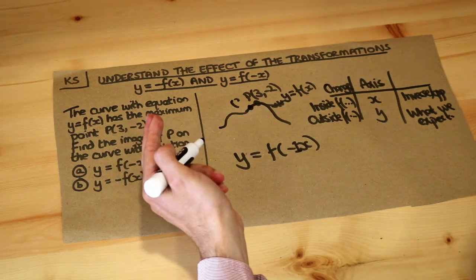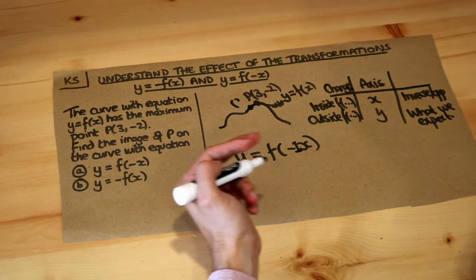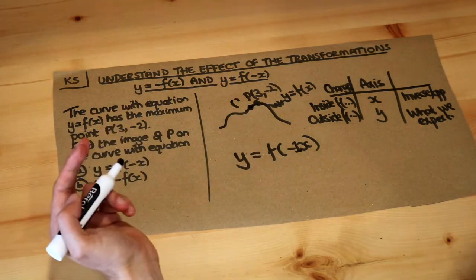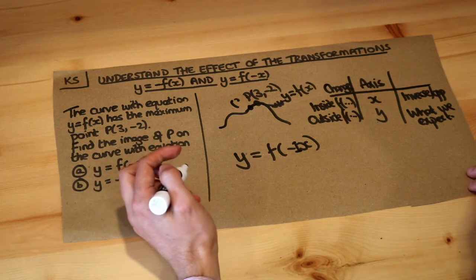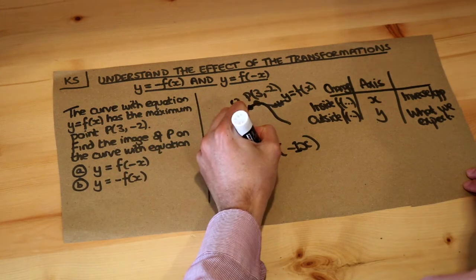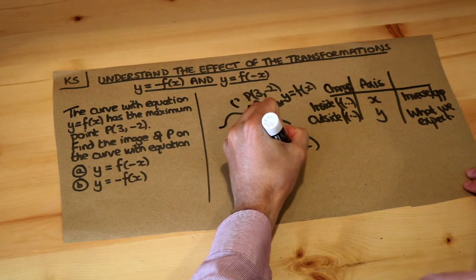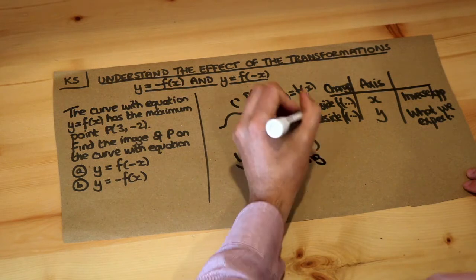What's the opposite of multiplying by minus 1? Well dividing by minus 1. But to be honest multiplying by minus 1 or dividing by minus 1 doesn't make a difference. So we're negating the x values. We're timesing or dividing the x values by minus 1.